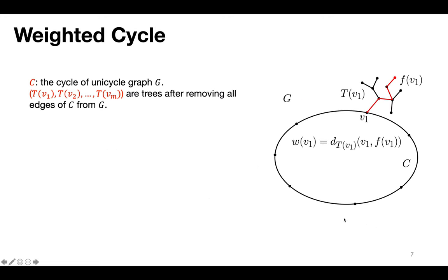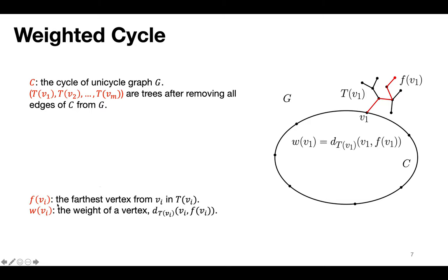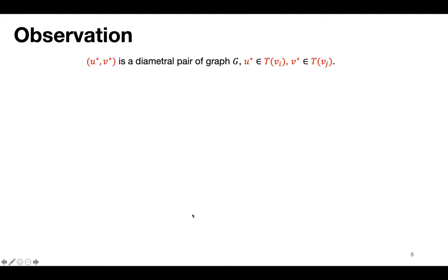Let C denote the cycle of the unicycle graph G. Removing the cycle edges gives us a collection of subtrees T(v1), T(v2), ..., T(vm). We define F(vi) as the farthest vertex from vi in the subtree T(vi), and the weight of vertex vi, W(vi), as the distance from vi to F(vi) within the subtree T(vi).